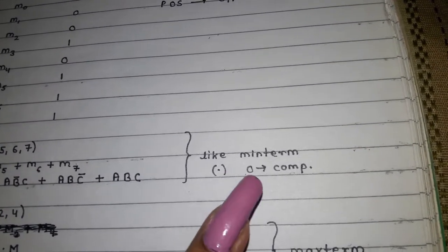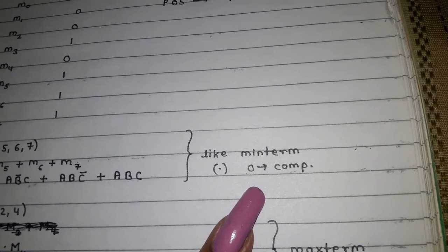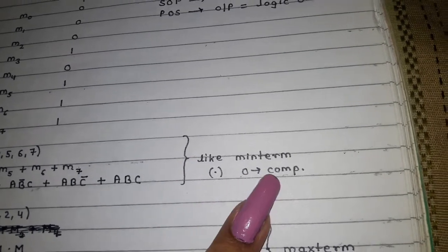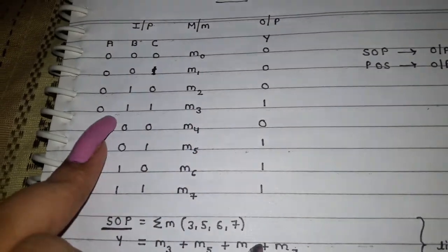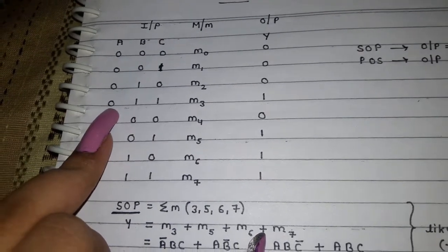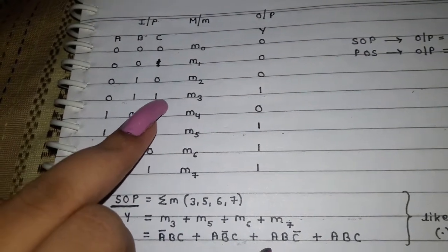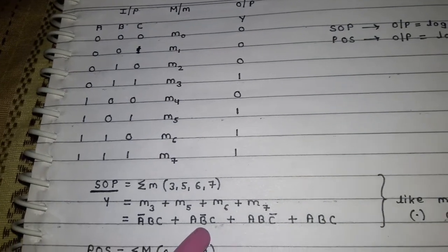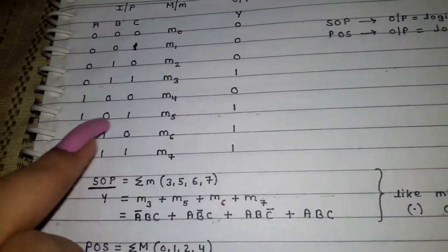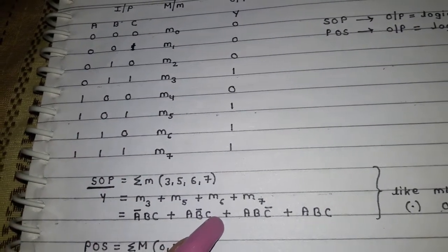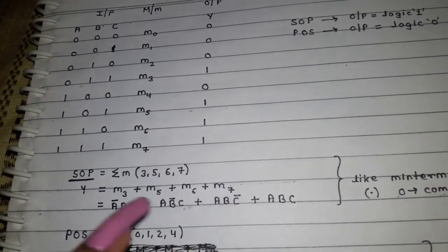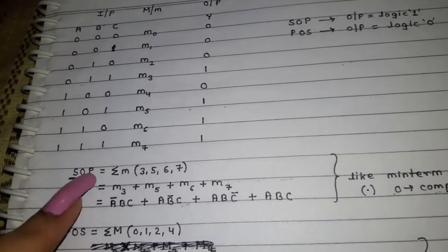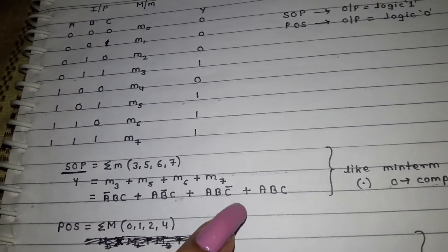Now you have to write this as per minterm logic. For minterm, we use dot (AND), and zero is complemented while one remains uncomplemented. For M3, A is 0 so it will be complemented, while B and C are 1 so they remain uncomplemented. For M5, A and C are 1 so they remain uncomplemented, while B is 0 so it will be complemented. You follow the same rule for M6 and M7. This is how you write the SOP form — these are your products and you are summing them up.